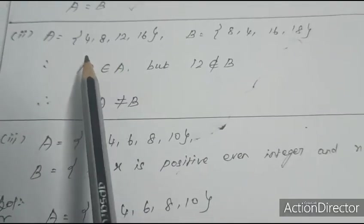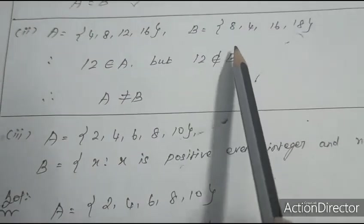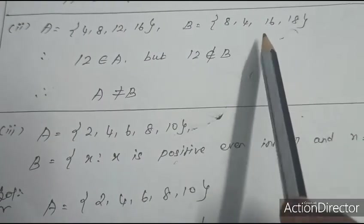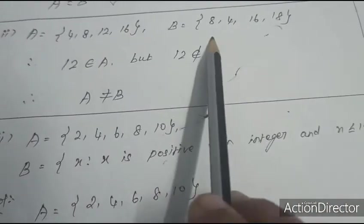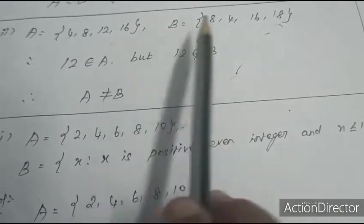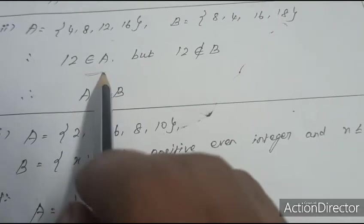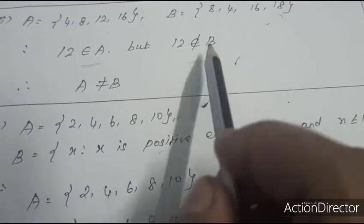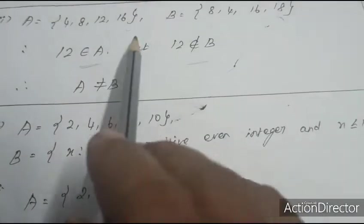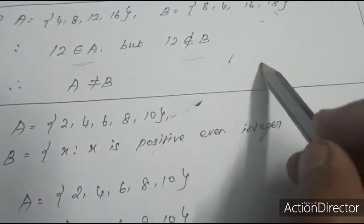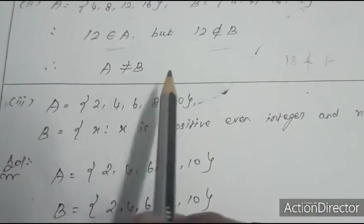Second: A = {4, 8, 12, 16} and B = {8, 4, 16, 18}. Checking: 4 is OK, 8 is OK, but 12 belongs to A and 12 does not belong to B. Also, 18 does not belong to A. Therefore A ≠ B.